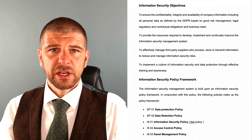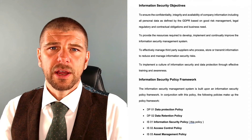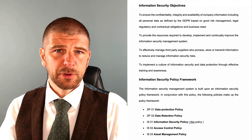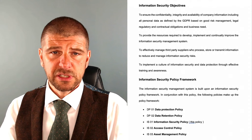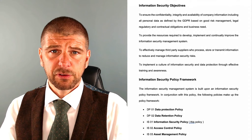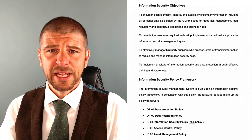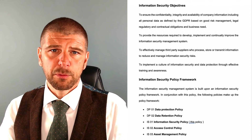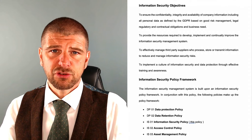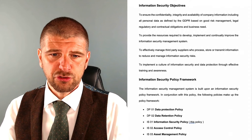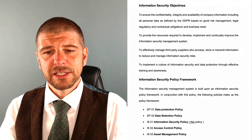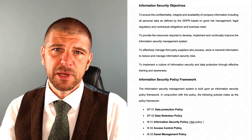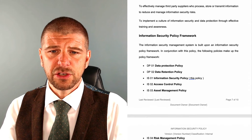What we're then going to do is lay out what our information security objectives are. This document comes pre-populated, but you need to understand for yourselves what your standard objectives are. As a rule, they are about reducing and managing risk, addressing legal and regulatory compliance, and implementing a culture of information security within your organisation.